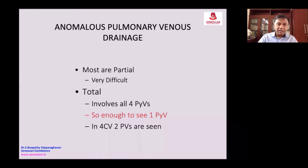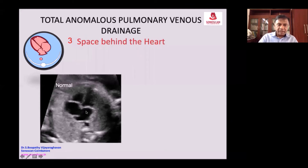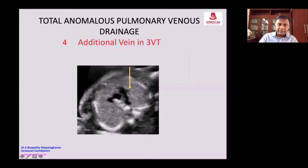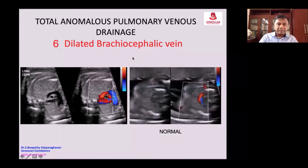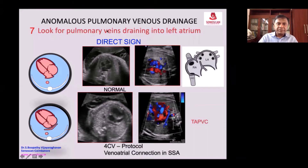At present, we aim to diagnose only total anomalous pulmonary venous drainage. Here you see the left atrium, which is very close to the descending aorta, which is in front of the spine. You see an additional vein — it can be left SVC or brachiocephalic. The brachiocephalic vein is seen as you make an axial sweep of the heart. You look for the pulmonary veins draining into the left atrium.